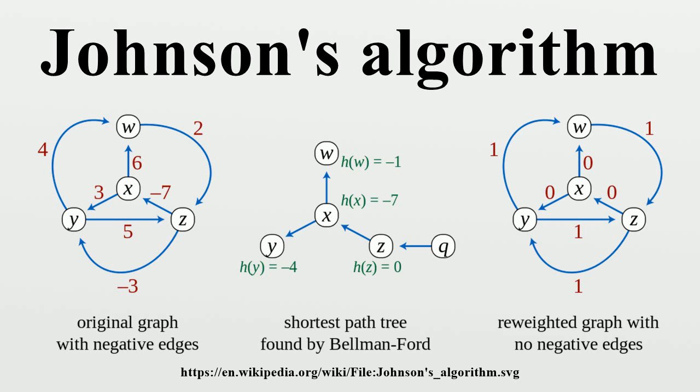Note that these values are all non-positive because Q has a length 0 edge to each vertex and the shortest path can be no longer than that edge.